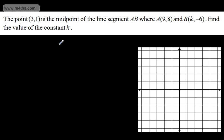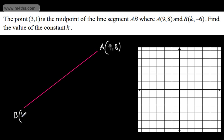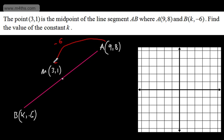This is fairly logical. Going from A's x-coordinate of 9 to the midpoint x-coordinate of 3, I've subtracted 6. So from the midpoint to B, I subtract another 6, giving x = negative 3. Using the formula: (9 + K)/2 = 3, so multiplying both sides by 2 gives 9 + K = 6, and subtracting 9 gives K = negative 3.